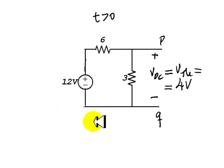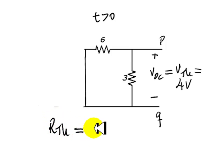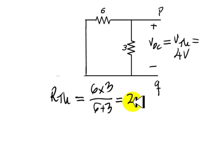And for RTH, because the circuit has only voltage sources, we kill the source like so and find what is the equivalent resistance that we see there. And that is just 6 in parallel with 3. RTH is 6 in parallel with 3, which is 18 divided by 9, and that is 2 ohms.